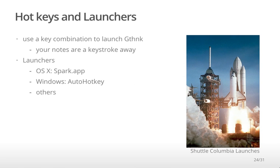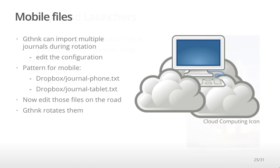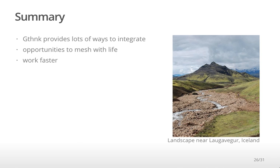With an application launcher, you can access GThink with just a few keystrokes. GThink supports importing multiple files during journal rotation, so it's possible to support multiple mobile devices — for example, a phone and a tablet. With your phone, edit your phone file; with your tablet, edit your tablet file, and GThink will rotate them normally. In summary, GThink provides lots of ways to integrate, and each one is an opportunity to mesh with your daily life and enable you to work faster.